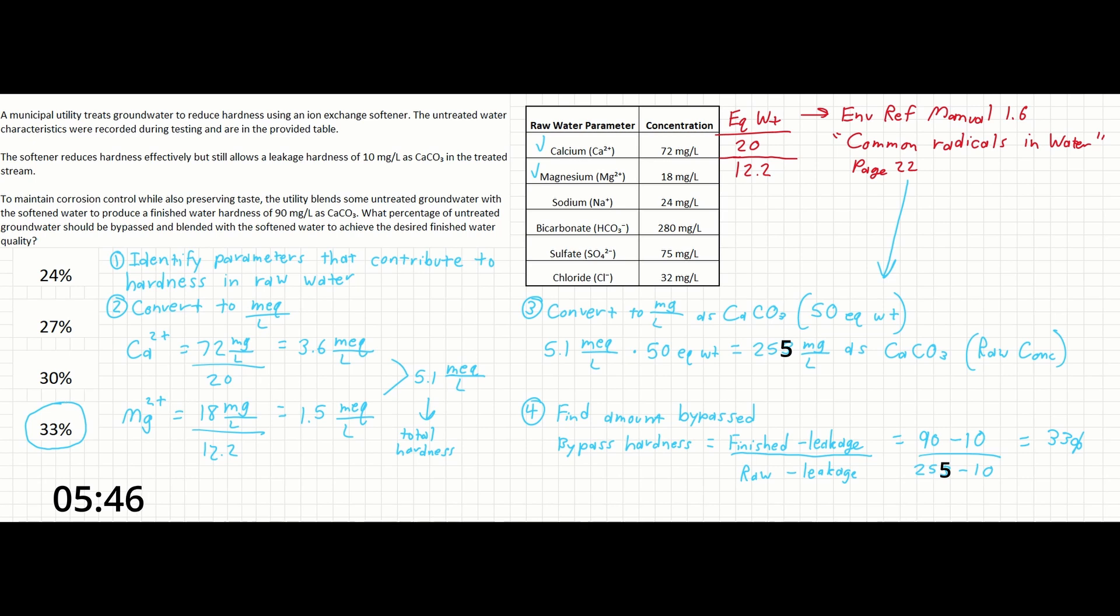So the big points to this problem are understanding which parameters you need when thinking about hardness, converting those to milliequivalents per liter and summing them together, and then converting again to milligrams per liter as CaCO3 so that they match the units of the rest of the values in the problem, and then finally using the bypass hardness equation to calculate the percent that should be bypassed. And that's it.